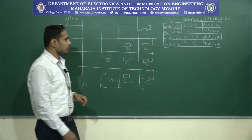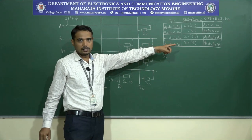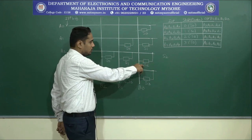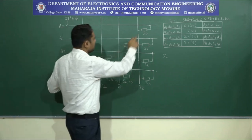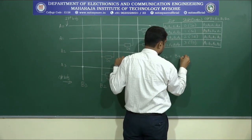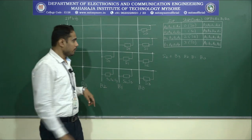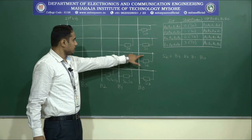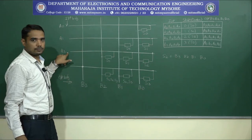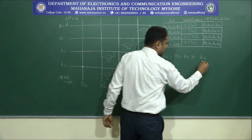Let us consider the example of switch S2. If switch S2 is closed, what is the effect on the shift at the output? Switch S2 is associated with row A2 and column B0. For output B0, since S2 is closed and corresponds to row A2 with respect to input B0, we can write B0 equals A2.